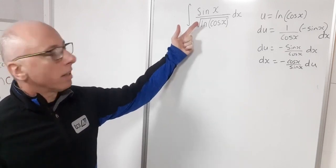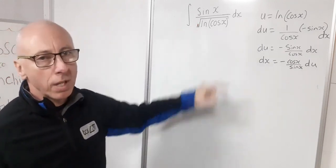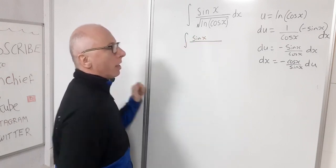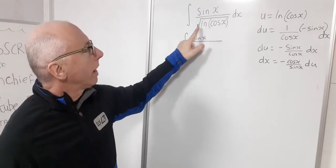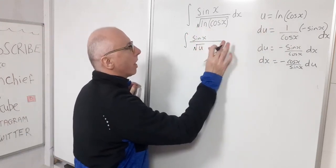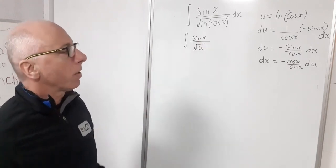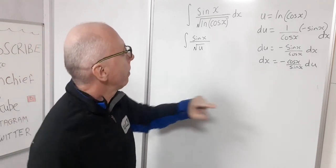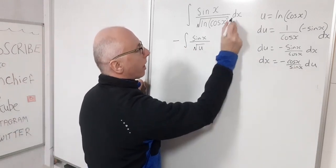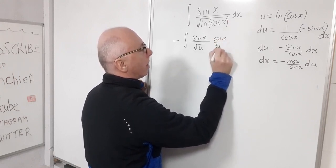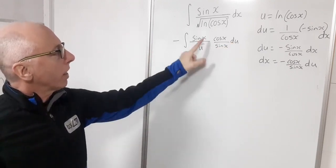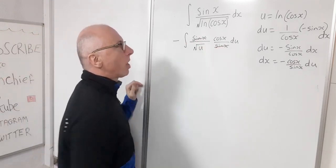Now I'm ready to rewrite the integral in terms of u. The sine of x in the numerator will cancel with the sine of x from the dx substitution. The square root of ln(cos(x)) is just the square root of u in the denominator. Substituting dx = minus cosine of x over sine of x du, and bringing the minus sign to the front, the sine of x terms cancel out — which was exactly the aim of this u-substitution.